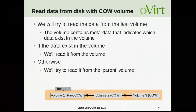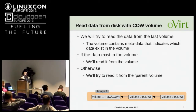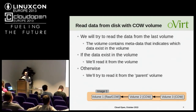When the hypervisor tries to read data from a specific place in the disk, it will first try to read it from the last volume — the active volume. Each COW volume contains a metadata section specifying what data the volume actually contains. So when reading from the disk, we first check if the data is in the active volume. If it's there, we read it from that volume. Otherwise, we try from the parent volume — in our example, volume three, then volume two, then volume one.